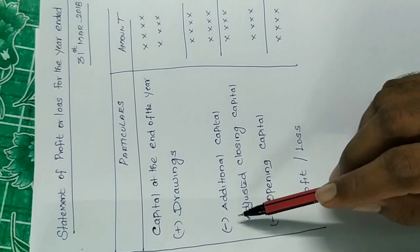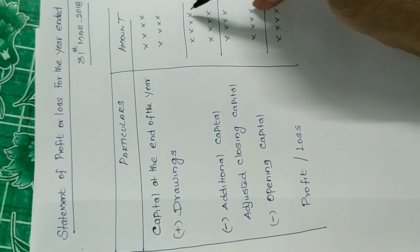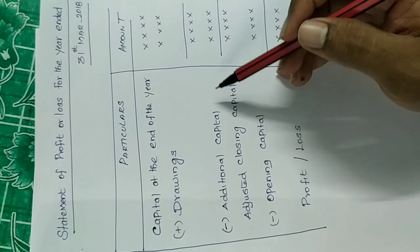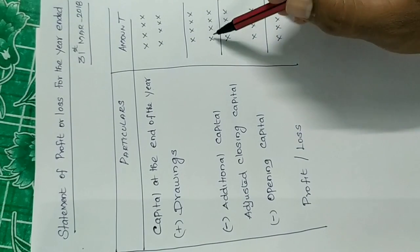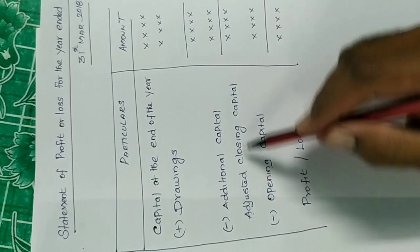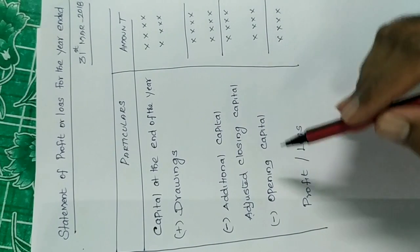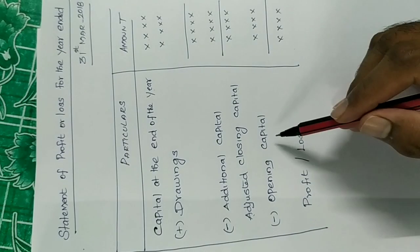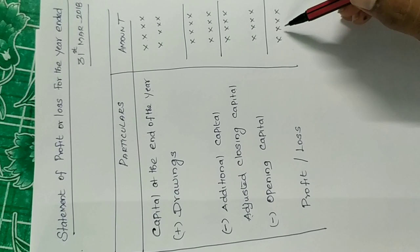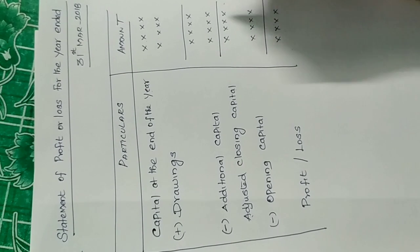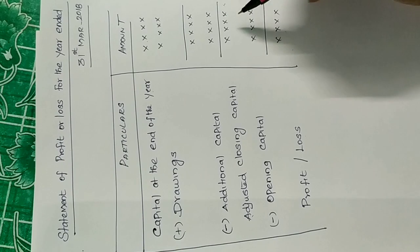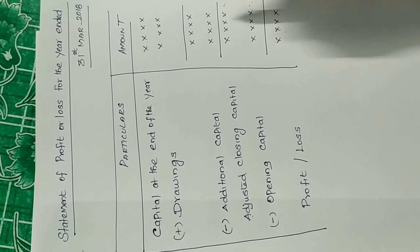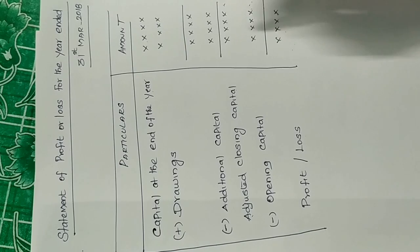If there is additional capital introduced, that is deducted. So: closing capital plus drawings, minus additional capital equals the adjusted closing capital. Then subtract the opening capital. The result is either profit or loss. If the adjusted closing capital is the greater value, it is a profit. If the opening capital is the greater value, it is a loss. This is the format for the statement of profit or loss for the year.